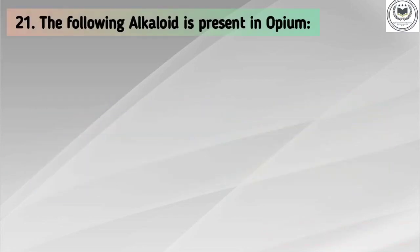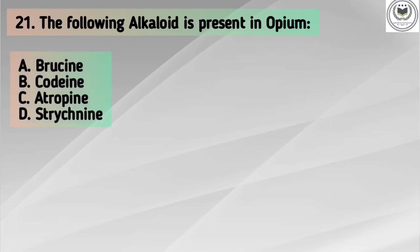Question number 21. The following alkaloid is present in opium. Options: A. Brucine, B. Codeine, C. Atropine, D. Strychnine. Answer is option B, Codeine.